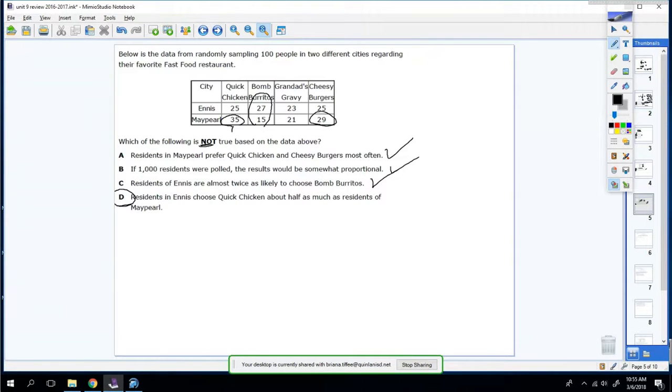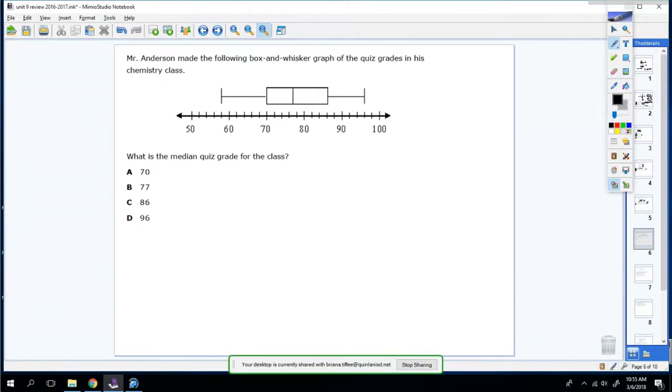Next one. Mr. Anderson made the following box and whisker graph of the quiz grades in his chemistry. What's the median quiz grade for his class? So his class, his quiz grade is right about here. And I would say it's 77. So the median is 77.